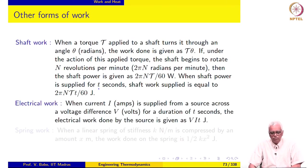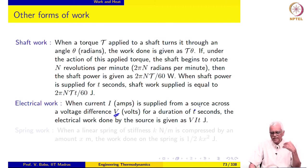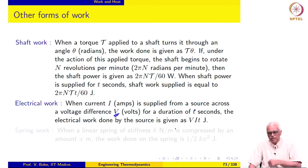Electrical work: when a current of I amps is supplied from a source across a potential difference of V volts for a duration of T seconds, then the electrical work done by the source is given as V times I times T — the product of voltage, current, and the duration for which the current is supplied.